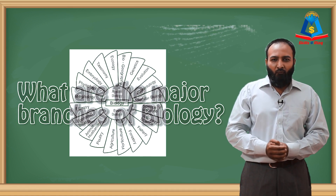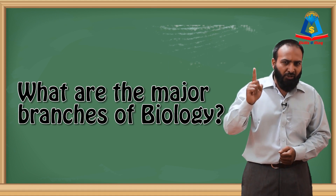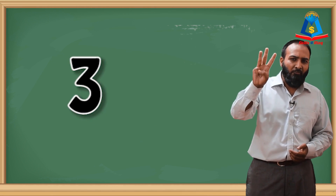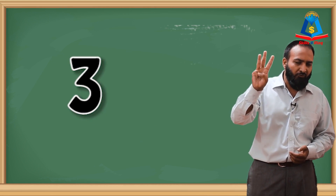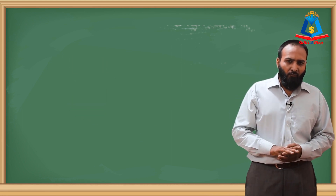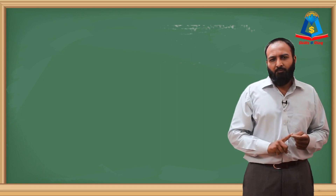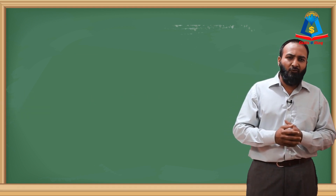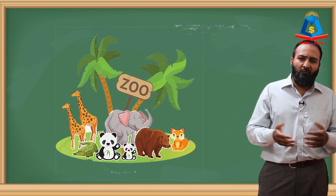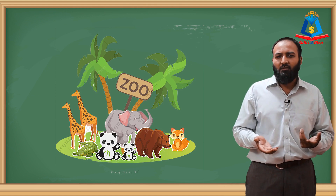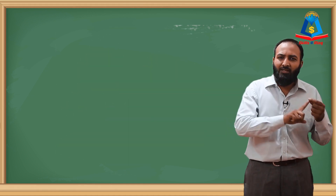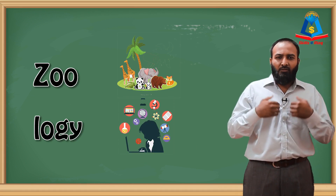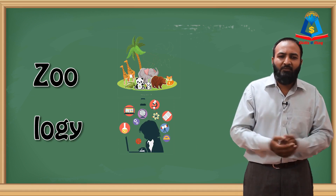So what are the major branches or divisions of biology? There are three major branches of biology. First is zoology. Students, have you ever visited a zoo? When you go there, what are you looking at? Animals. So zoo means animals and logy means study. What is zoology? It is the study of animals.